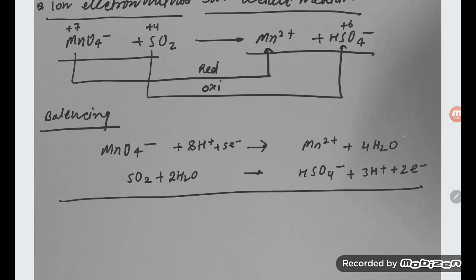Now equal the electrons in both the equations. How can you equal? Here 5. So you can multiply by 2. And here you can multiply by 5. So it is coming 2MnO4 minus plus 16H plus plus 10 electrons minus. This side 2Mn2+ plus 8H2O.